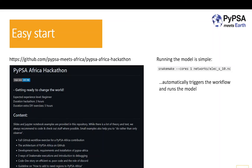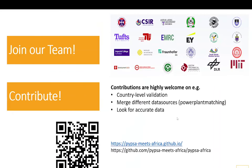Even though the model looks highly complicated with many tasks, rules, and workflows, actually running the model is rather easy. Once you have the setup, you can type a single command in your command interface and already create a network for Nigeria or Africa. The start should be really easy, and we are always welcoming people to join us. Our team is growing very dynamically with many institutions on our side, and we are definitely happy not just to talk to you but to encourage you to come into the team and contribute — even if you are not sure what to contribute, we definitely have a small task for you to begin with.